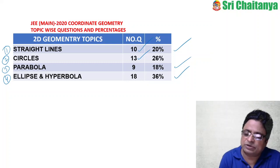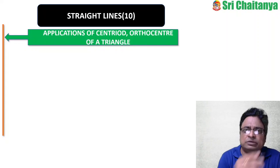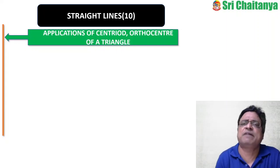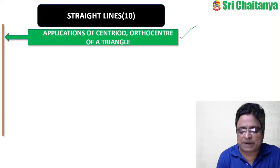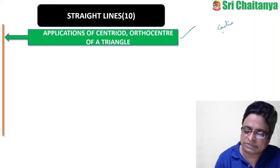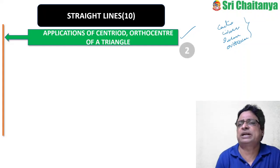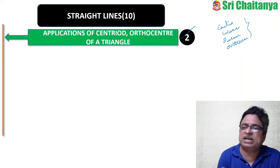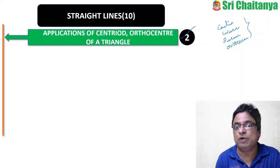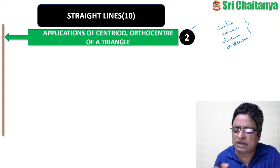Among the 10 straight lines questions, the subtopics are distributed as follows. First: applications of centroid, orthocenter, and circumcenter of a triangle — including incenter, properties, equilateral triangle, and area-related questions — 2 questions were asked. These are simple and can be solved with direct formulas.